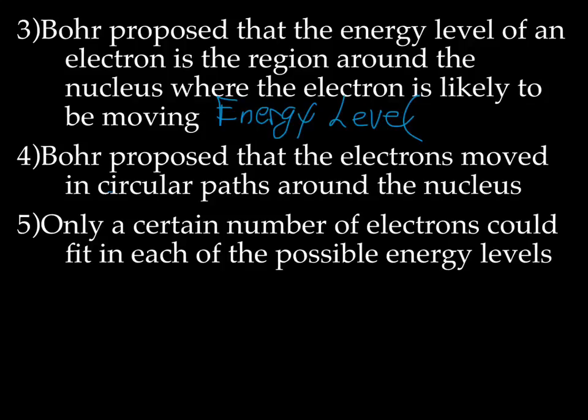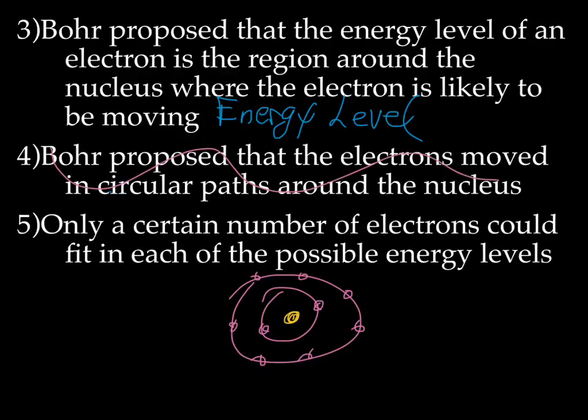He just came up with the idea of energy levels. And from there, he proposed that the electrons moved in circular paths around the nucleus. So he is the one that came up with this orbit model. If you remember, that's the one where the nucleus is again in yellow and the electrons are in pink. So he came up with this idea that the electrons basically orbit or circle the nucleus, which turned out to be incorrect. But he still was the first one with this idea that the electrons are organized, and in this case, in energy levels. Further, he thought that only a certain number of electrons could fit into each of the possible energy levels, which is also true.